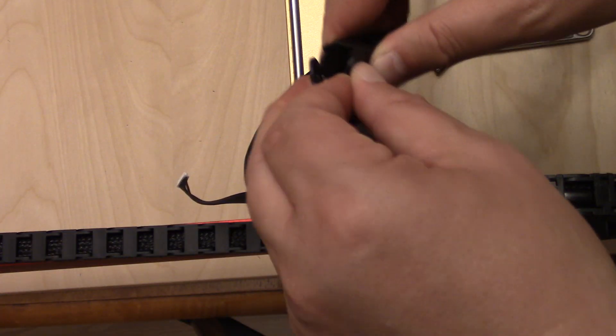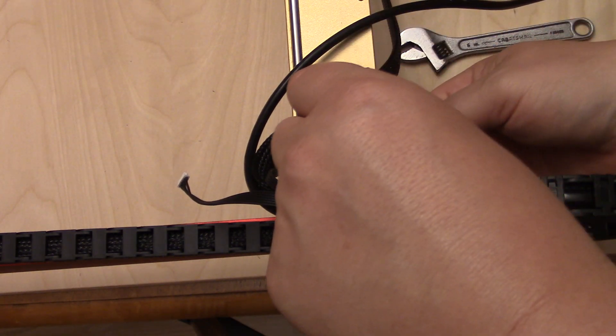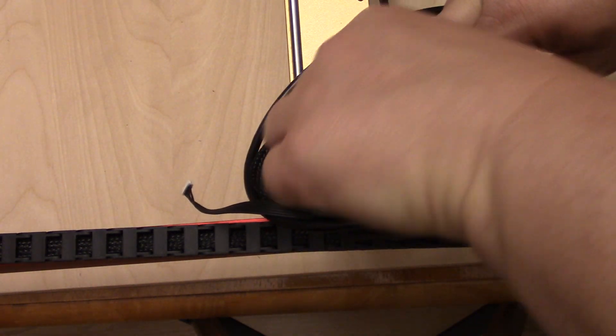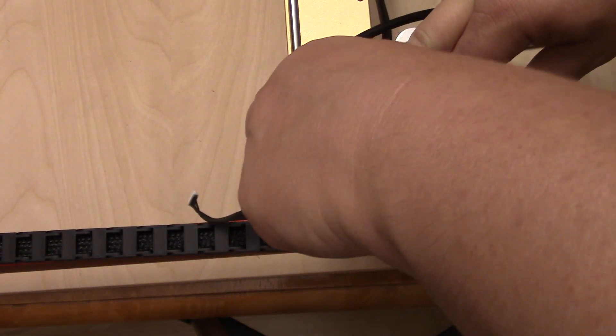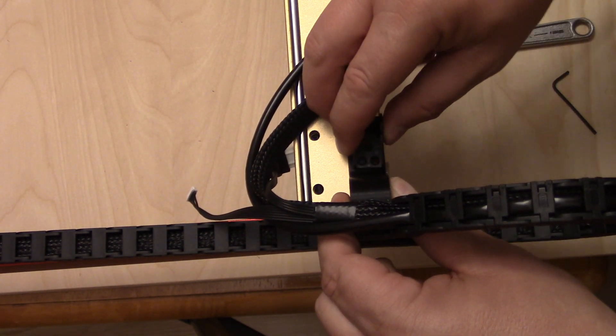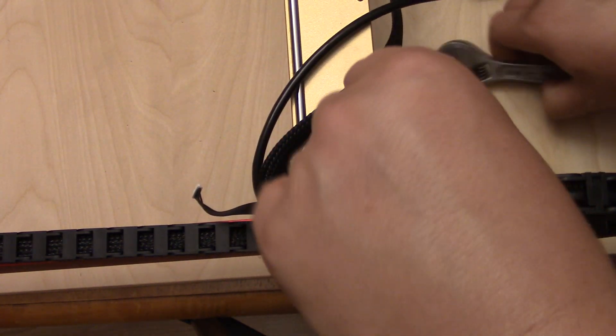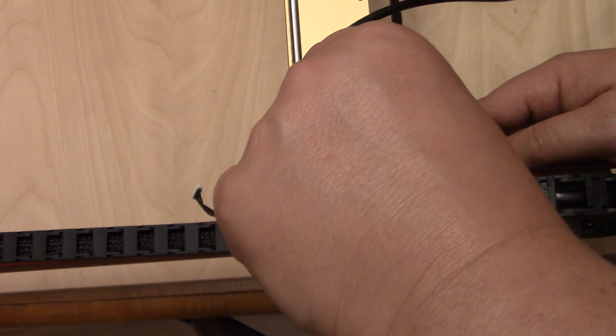To install the gantry drag chain, I remove the end of the drag chain and remove the screw we left loose earlier that attaches the chain bracket to the gantry. I then put the screw through the hole in the end of the chain, then the hole in the bracket through the gantry. I then secure it with the provided nut and an adjustable crescent wrench.